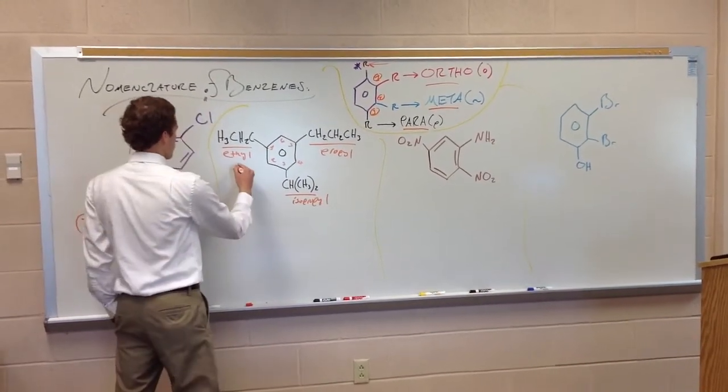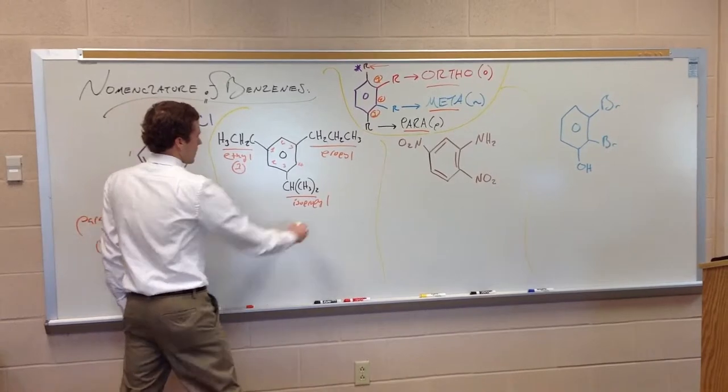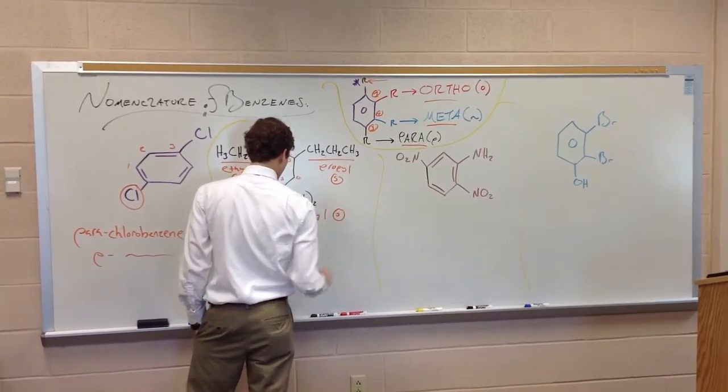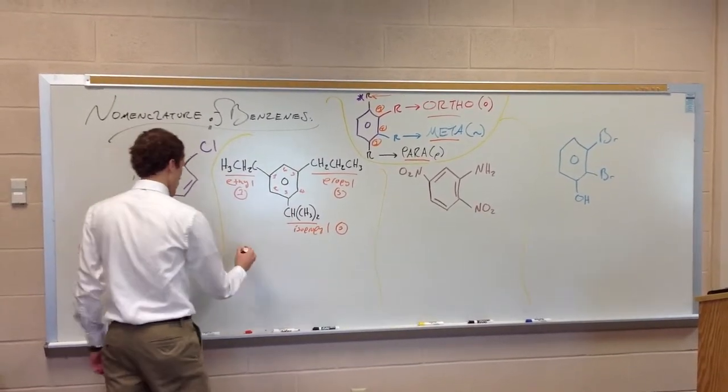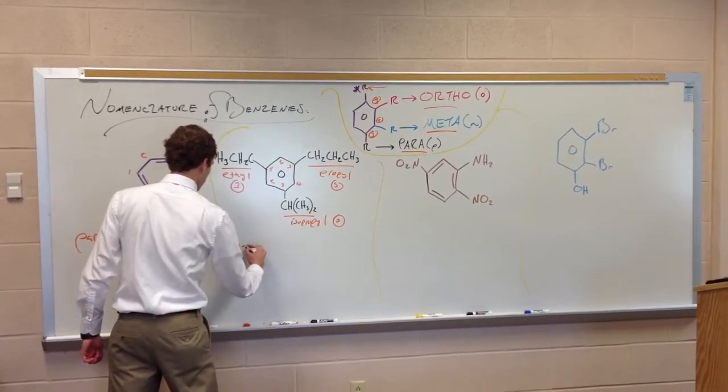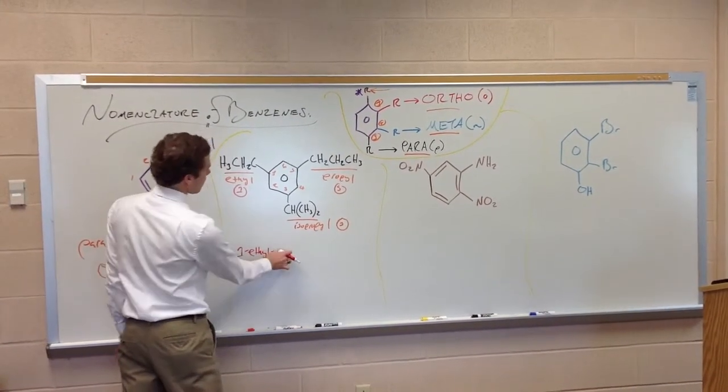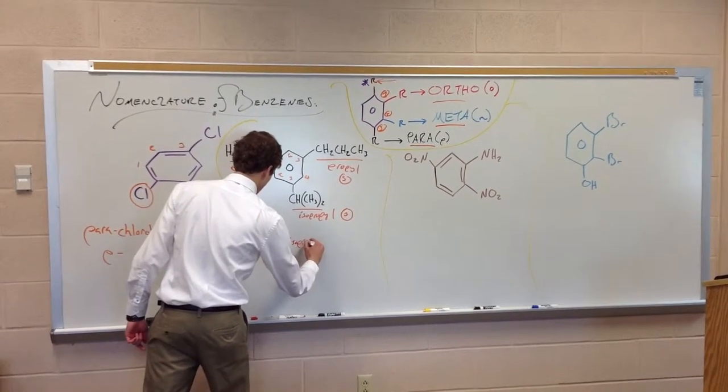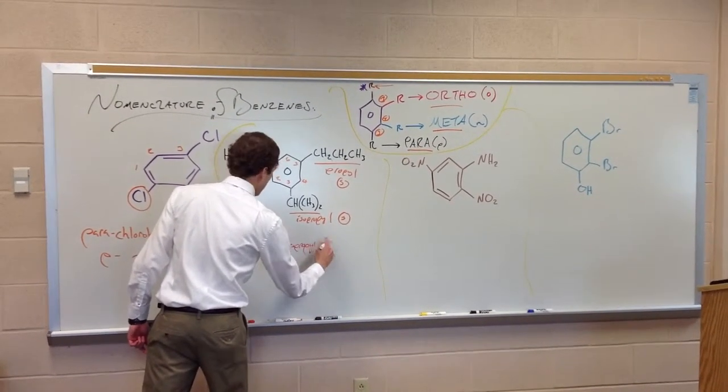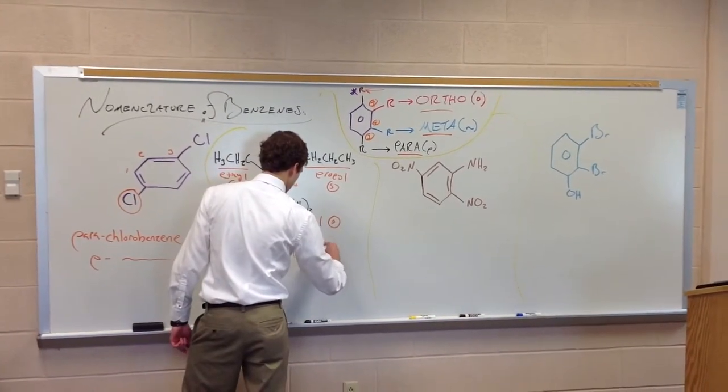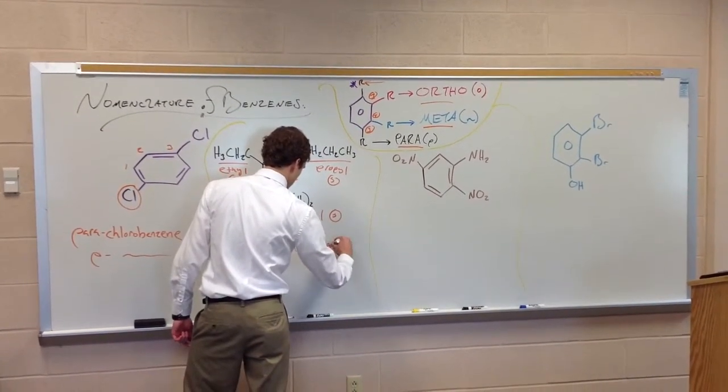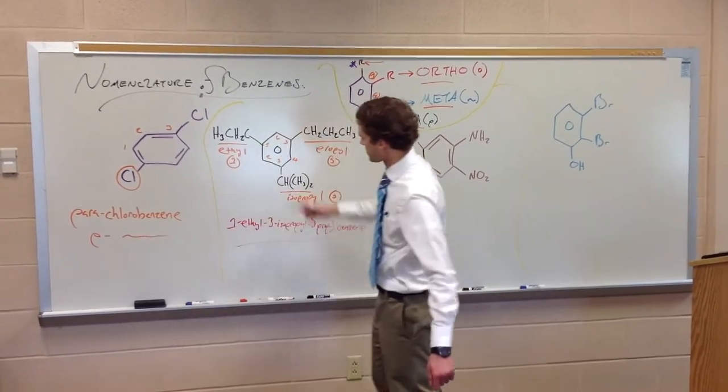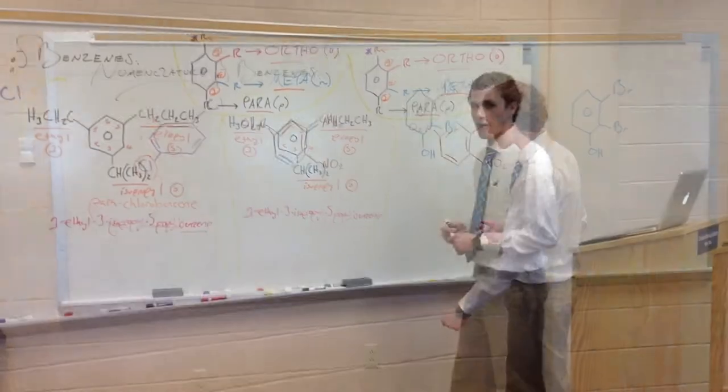So now we've got our carbons here. So this ethyl group is at carbon 1. The propyl group is at carbon 5. And the isopropyl group is at carbon 3. So when we go to name this guy, we will have 1-ethyl. And, let's see, 3-isopropyl. And 5-propyl. Benzene. So that's the name for this guy. 1-ethyl, 3-isopropyl, 5-propyl benzene.